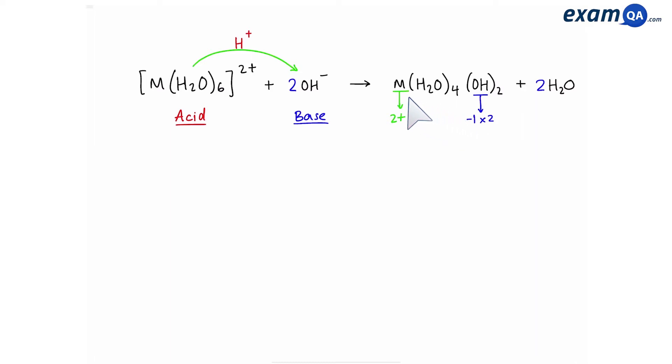Since the metal is +2 and hydroxide is -1, we have two of them, that gives us -2. Overall, there's going to be no charge, so we have now created an insoluble precipitate.